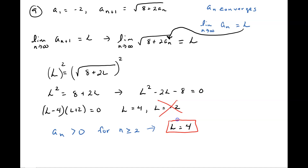Those are two nice examples of finding a limit when given an initial element and a recursion formula, under the assumption that the sequence does, in fact, converge. Given those assumptions, we are able to make the case that these are the limits. I hope this video was helpful — like and subscribe.